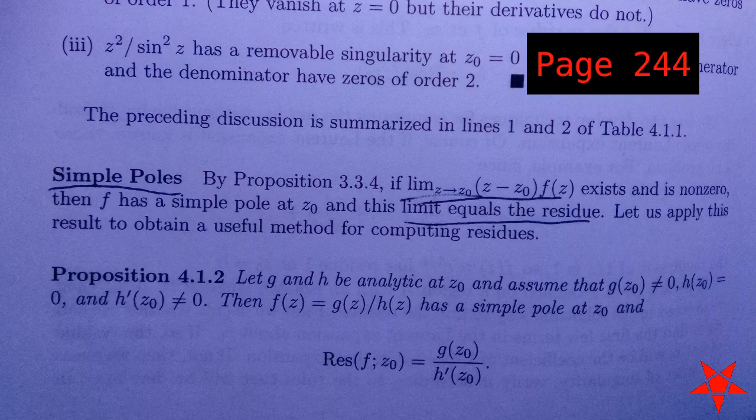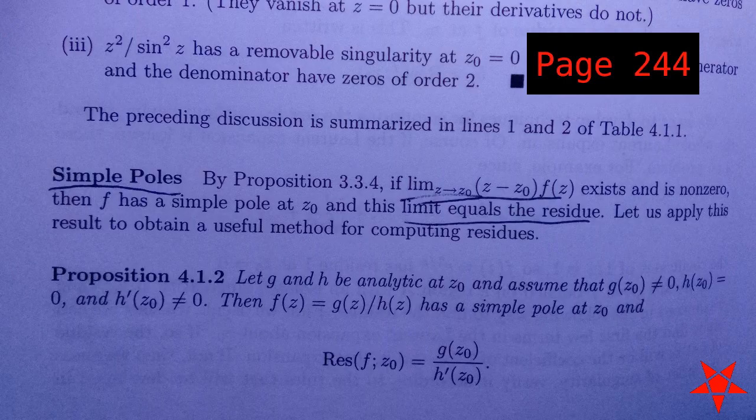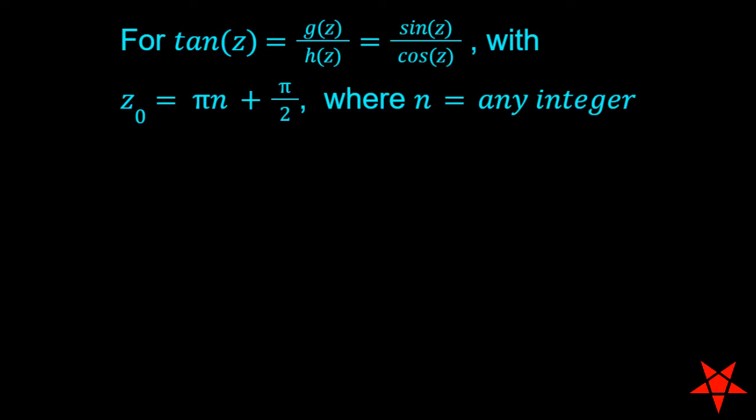Turning to Proposition 4.12 on page 244 of Marsden and Hoffman, we see that it requires that the functions h and g be analytic at the singular point in question, that g(z₀) be nonzero at that point, and that h(z₀) be zero while h'(z₀) must be nonzero.